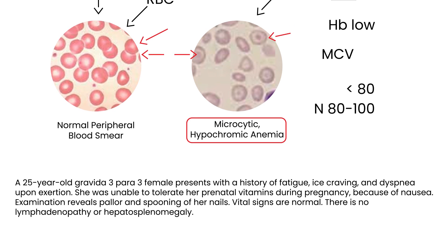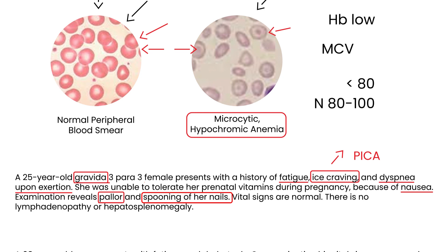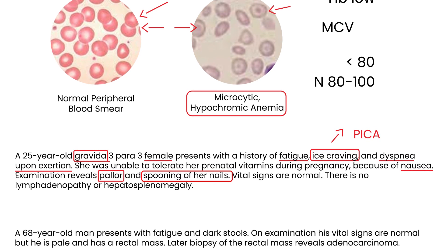First vignette: A 25-year-old gravida 3 para 3 female presents with fatigue, ice cravings, and dyspnea on exertion. She was unable to tolerate prenatal vitamins during pregnancy due to nausea. Examination reveals pallor and spooning of her nails. This is consistent with pica, and pregnant women can have increased iron requirements — along with physical exam findings consistent with iron deficiency anemia.